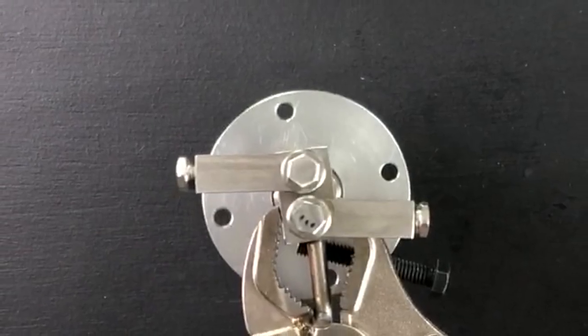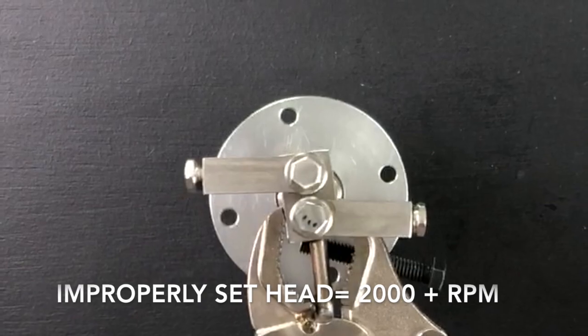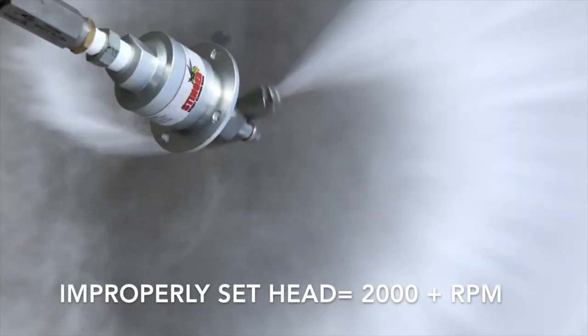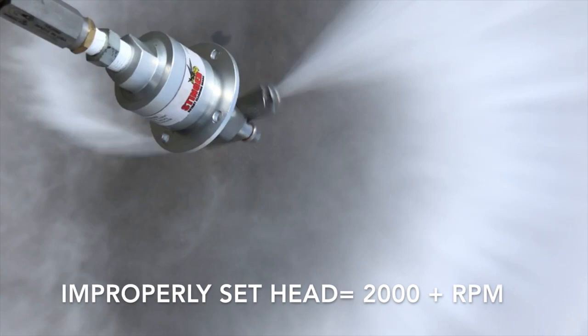On the contrary, a head that's set at its maximum or high RPM setting can exceed 2000 RPM, with the end result being a cleaning reach of only 6 to 8 inches from the end of the spray tip.